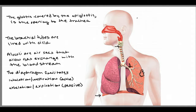The medulla oblongata and the pons contain respiratory control centers, so they are involved in controlling respiration.